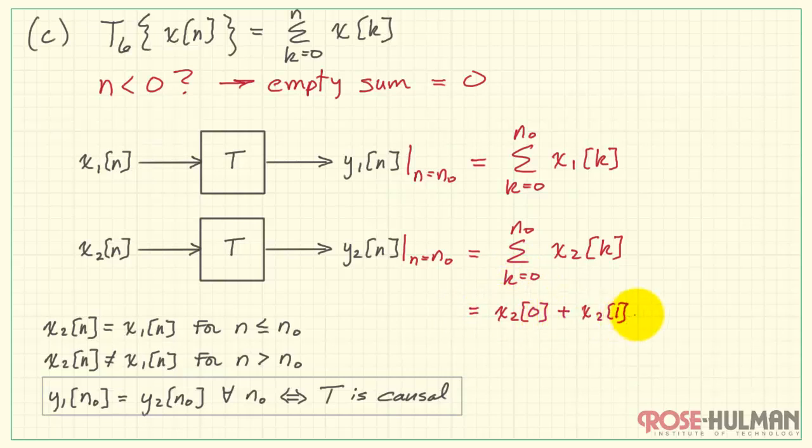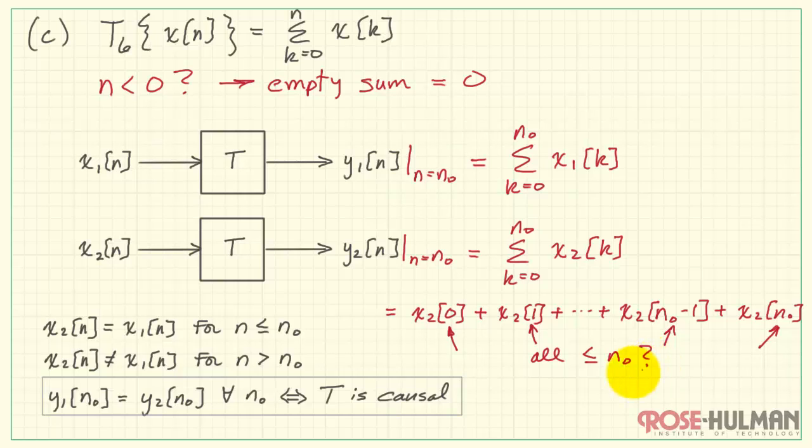We have the same setup as before. Here's my outputs, evaluated at n equals n0. Let's expand this summation so we can see more clearly what's going on. We'll start at k equals 0, keep adding in values until we finally get to the vicinity of n0. Let's call that, the previous one would be x2 of n0 minus 1, and then we get to x2 of n0. This expanded sum would be the same form for x1. Now we ask the question, in each case, is the time index always less than or equal to n0?